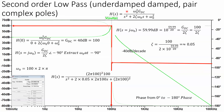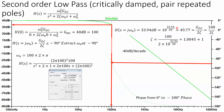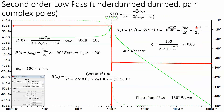Now for an obviously under-damped pair of complex poles: the DC gain is still 40 dB, so that doesn't change. What has changed is this peak is now very obvious, now at 60 dB, whereas before we were at around 34 dB or 14 dB. Using the same equation, we now get a damping ratio much less than 1 — specifically 0.05.